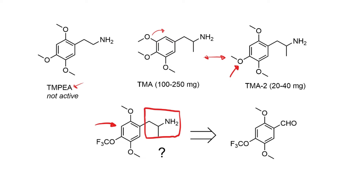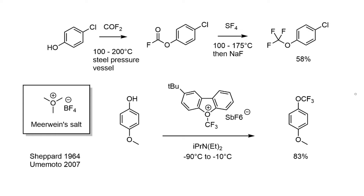I'm just going to reduce the problem to wondering how we might access the benzaldehyde for the Henry condensation with nitroethane. From the literature, trifluoromethoxy groups are rather difficult to introduce. An early report from Shepard in 1964 reacts phenols with carbonyl fluoride — the fluorine analogue of the chemical warfare gas phosgene — in a steel autoclave at 200°C to form intermediate formyl fluorides. These then undergo deoxyfluorination with sulfur tetrafluoride, another vigorously reactive gaseous reagent. Sodium fluoride is added to mop up excess fluorinating reagent. Shepard obtained respectable yields, although the rest of your molecule needs to be quite robust to tolerate these stringent conditions.